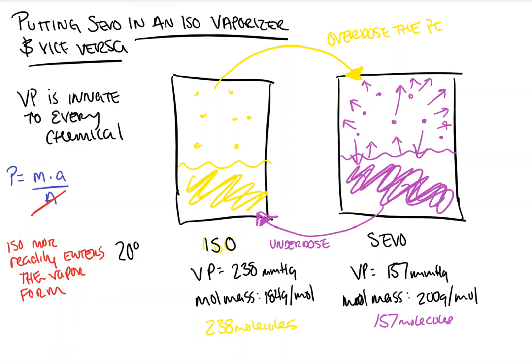I hope this made sense. I'm not a physicist or a chemist, but this is the way that I conceptualize it. If you have any questions or concerns, please let me know. Otherwise, that's why putting sevo into an iso vaporizer and vice versa leads to the outcomes described. As always, feel free to write in. Stay tuned for the next video — we're probably going to take a look at the desflurane vaporizer and what makes it special.